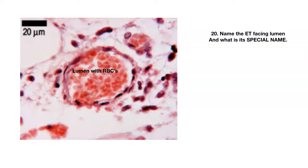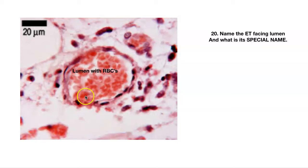Number twenty — name the epithelial tissue facing this lumen. Not a very good picture, but you can make it out. You know this is a blood vessel because the lumen is filled with red blood cells. This is simple squamous — this is called endothelium.